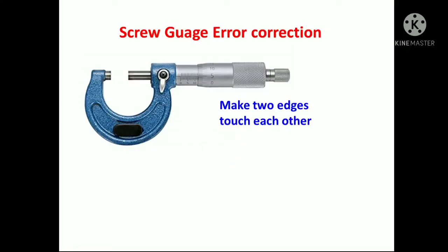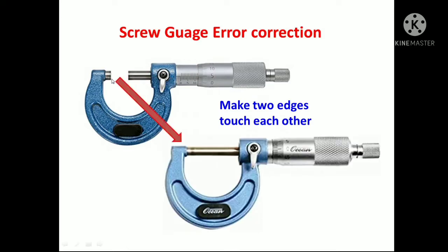Next, error calculation. Before doing a screw gauge experiment, first you have to check whether this screw gauge gives you a perfect answer or not. To check for errors, first make these two edges touch each other. Rotate the head scale and bring the movable edge towards the fixed edge. When these two touch each other, you will get a tuck tuck tuck sound. Here you are not taking any measurement — just make these two edges touch each other.